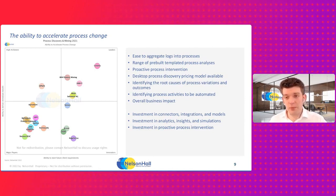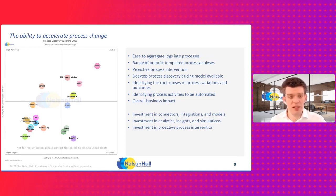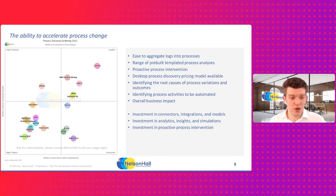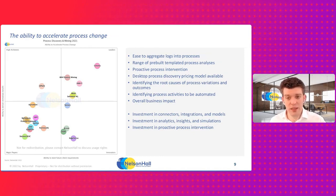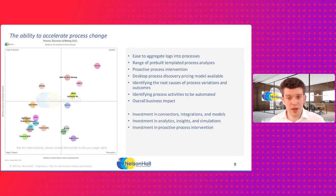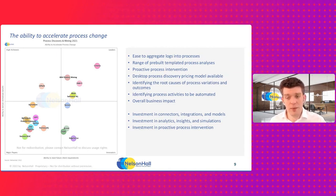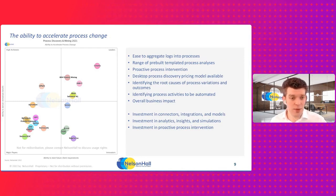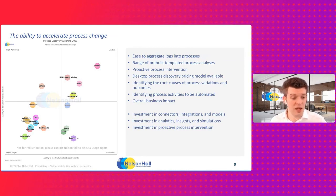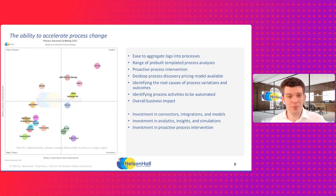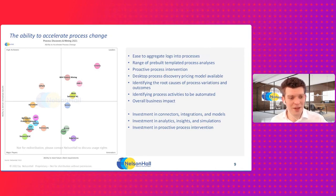I'm happy to share some feedback from clients and from Nelson Hall. You can see on the right-hand side a couple of the criteria that Abby scored very highly on. The ease of aggregating the logs was 5 out of 5. The desktop discovery pricing models was 5 out of 5 — that was client rated. Range of pre-built templates for analysis was a 4, still much higher than competitors. The overall business impact rating we gave was 4.5 — it was actually a 4.6, so I had to pull that down rather than push it up.